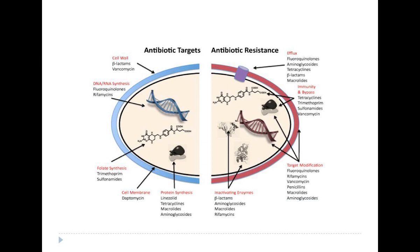In terms of antibiotic targets, many agents work on the bacterial cell wall — particularly the beta-lactams, which include cephalosporins and penicillins, and vancomycin. Many other agents work on protein synthesis. Although bacterial protein synthesis also relies on ribosomes like human cells, the bacterial ribosomes are sufficiently different to allow selective toxicity.